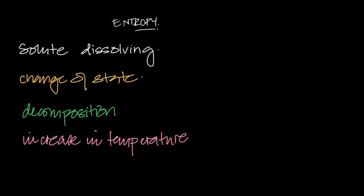What we're looking to do now in the next stage is to look at equations and predict, with some level of certainty, the sign of the entropy change. The symbol for entropy change is delta S — S for entropy, delta for change.